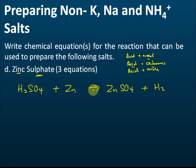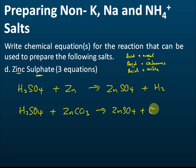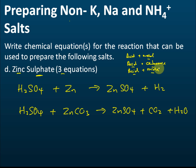For the second reaction — acid with carbonate — we use sulfuric acid and zinc carbonate. The products are zinc sulfate, carbon dioxide, and water. For the third reaction — acid with metal oxide, which is also a neutralization reaction — we use sulfuric acid because the negative ion is sulfate.